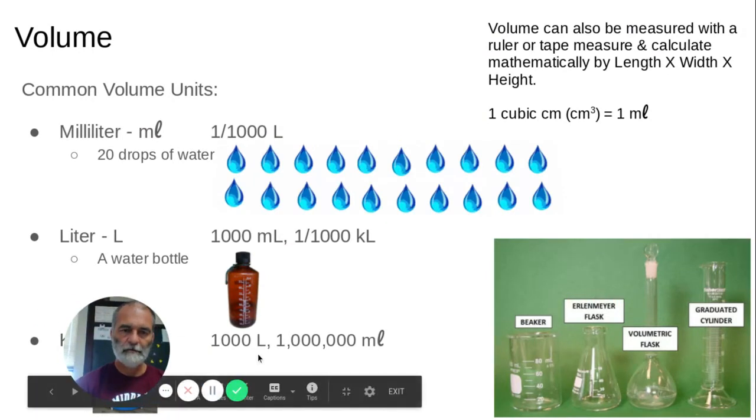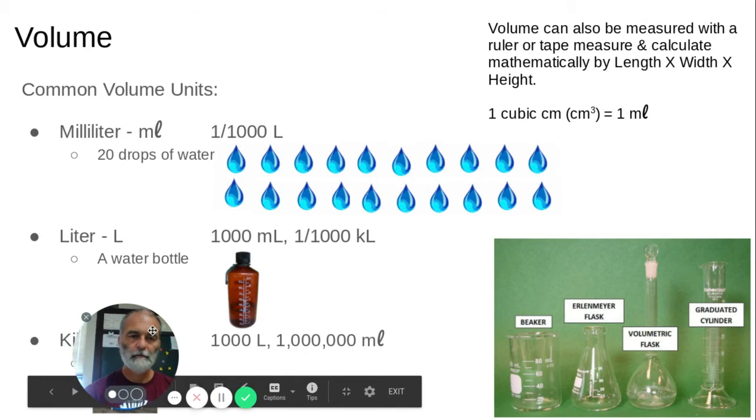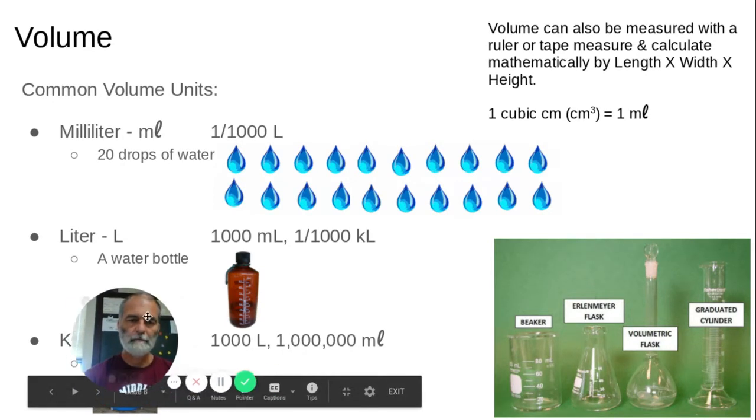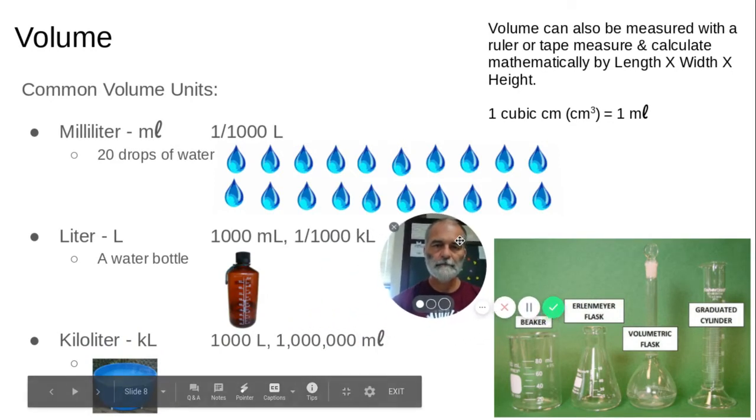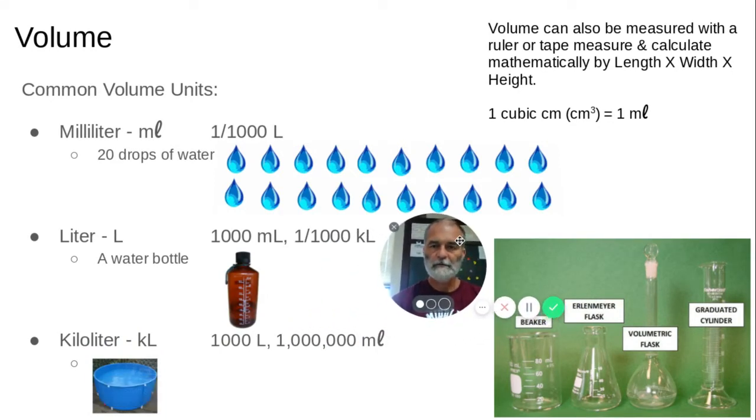So a few little things about volume. First of all, some of the common volume measurements. A milliliter is about 20 drops of water. A liter is a water bottle, kind of like what we talked about. A water bottle that you would drink out of is about 1,000 grams, because one gram is the same thing as one milliliter. And then a kiloliter would be like a pool full of water.